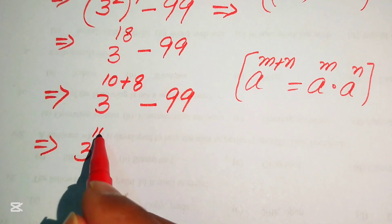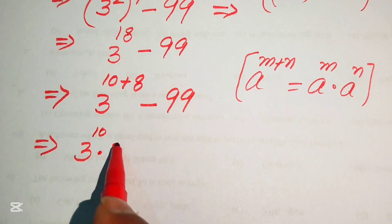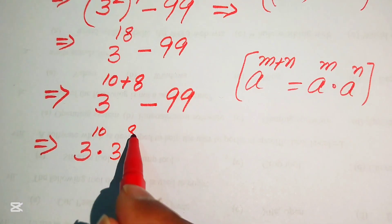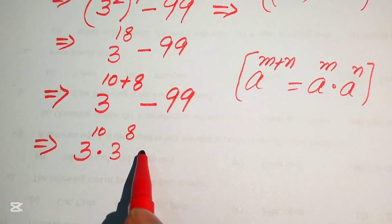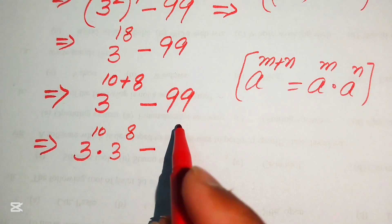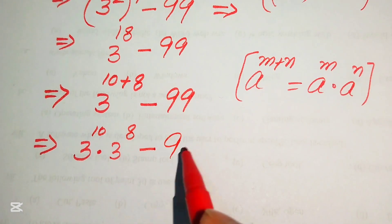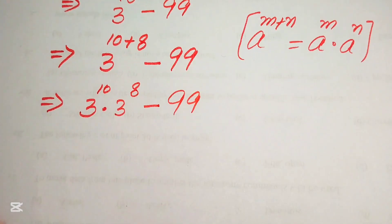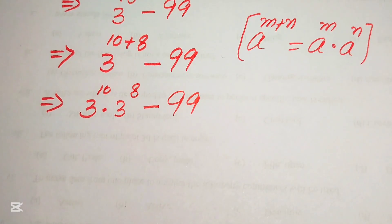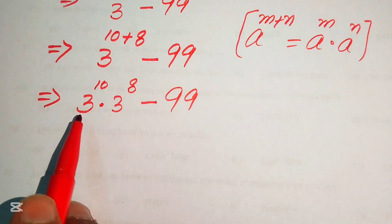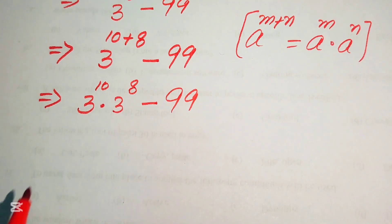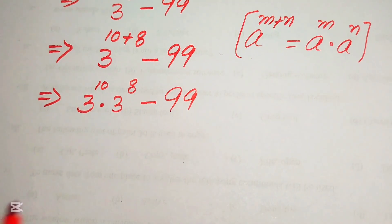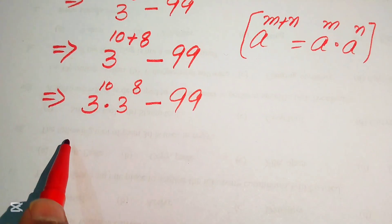According to this law we break the exponent, writing it as 3 to the power of 10, multiplied by 3 to the power of 8, minus 99. Now we need to find the values of 3 to the power of 10 and 3 to the power of 8.